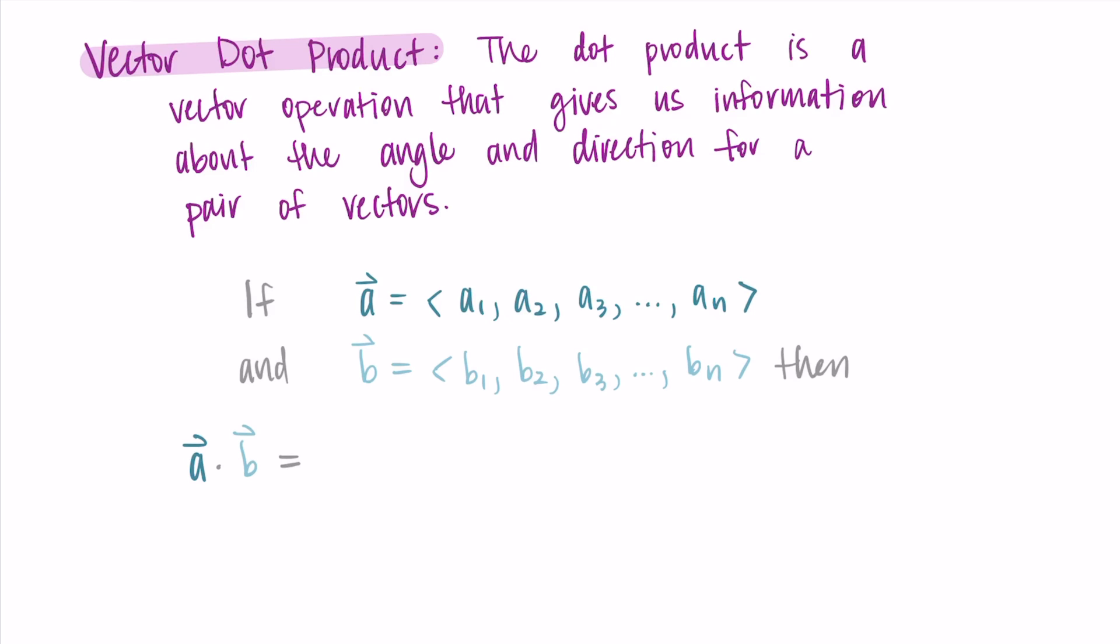And we write it as the product of the first component, a1 b1, plus the product of the second components, a2 b2, plus the product of the third components, a3 b3, etc., all the way up to an bn. So this definition gives us the dot product of the vector a and the vector b.